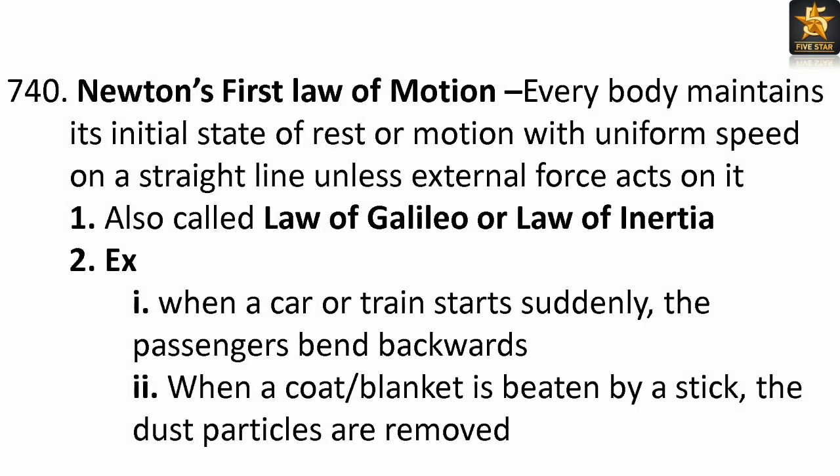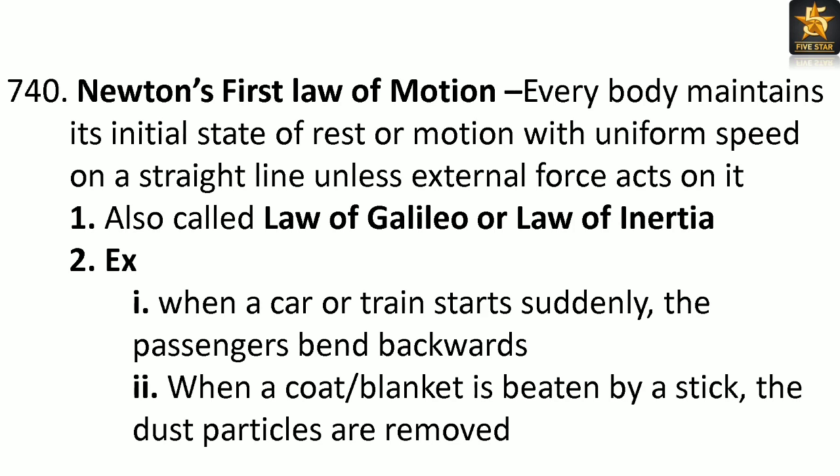Newton's first law of motion: Every body maintains its initial state of rest or motion with uniform speed on a straight line unless an external force acts on it. Also called the law of Galileo or law of inertia. Examples: When a car or train starts suddenly, the passengers bend backwards. When a coat or blanket is beaten by a stick, the dust particles are removed.